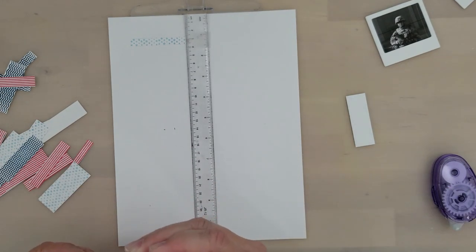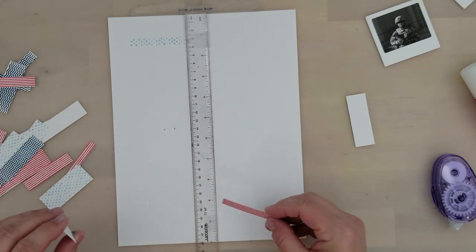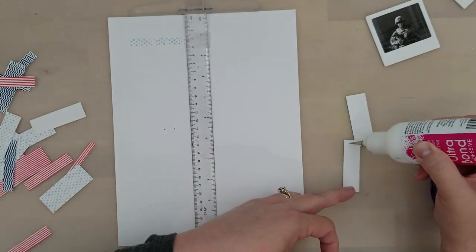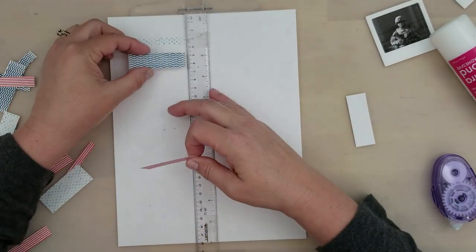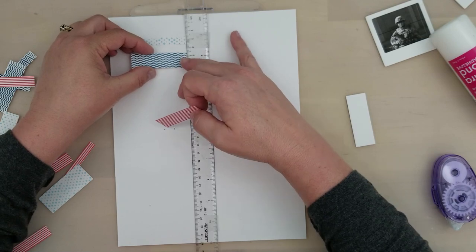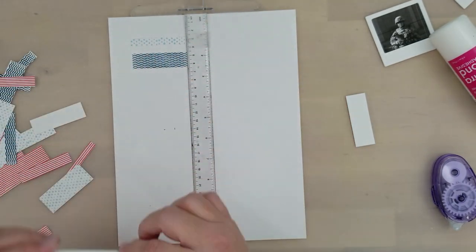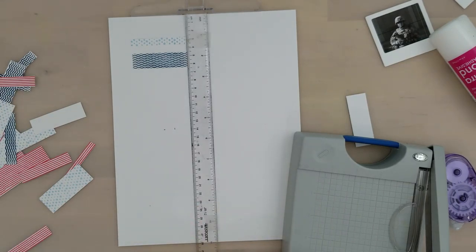All right, I'm ready to start bringing this layout to life. Now I'm using Neenah Avalanche White 8.5x11 110 pound cardstock. I've used removable tape - this is Scotch removable tape - to temporarily hold that ruler in place so I can line the pieces up straight down the cardstock.